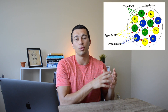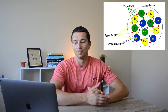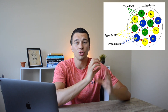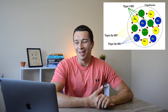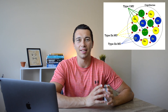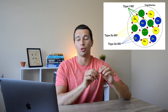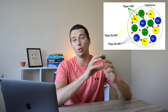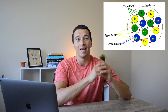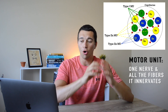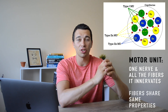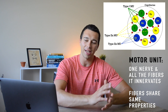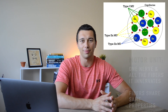This next picture is a really good way to see the difference between the type 1's, type 2a's, and type 2x's. The green muscle fibers represent type 1 motor units, the yellow ones are type 2a's, and the blue ones are type 2x's. In a real muscle there will be many more than just a few motor units of each type — this is just to simplify and give a good visual of how this looks.